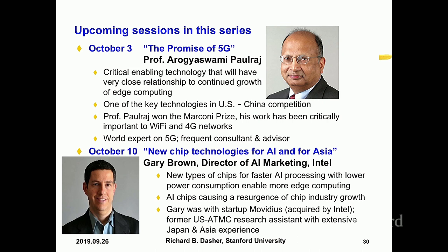Two weeks from now we've got Gary from Intel who's going to talk about chips for processing AI functions. Gary was with a startup company named Movidius that had an AI acceleration device — they were bought by Intel. Intel is really at the front of a lot of these new initiatives related to edge computing, and Gary can tell us about them. He has worked in Japan for many years and has a good grasp of the Japanese language, so it'll be interesting to get his international perspectives.